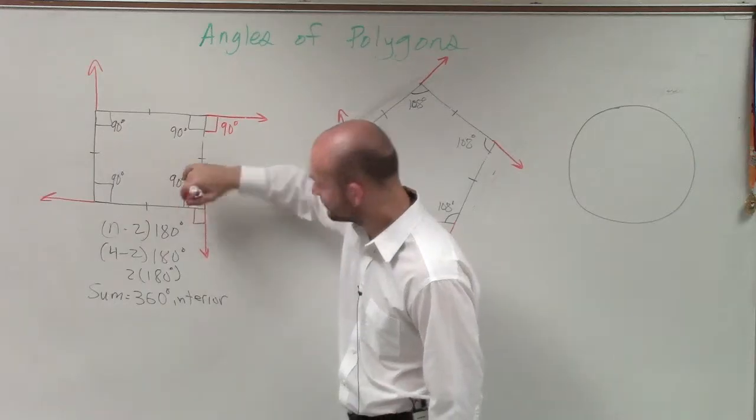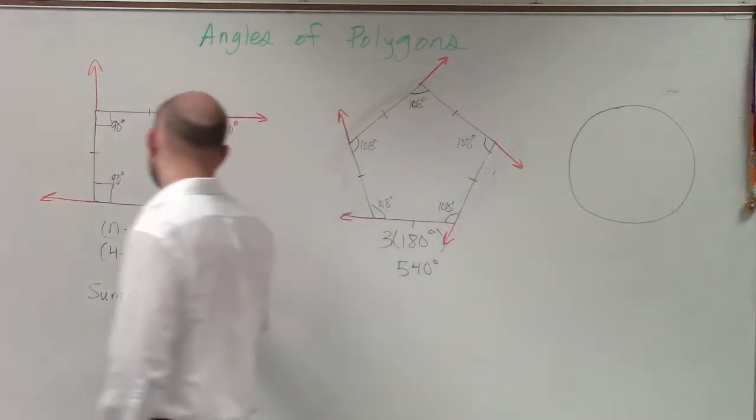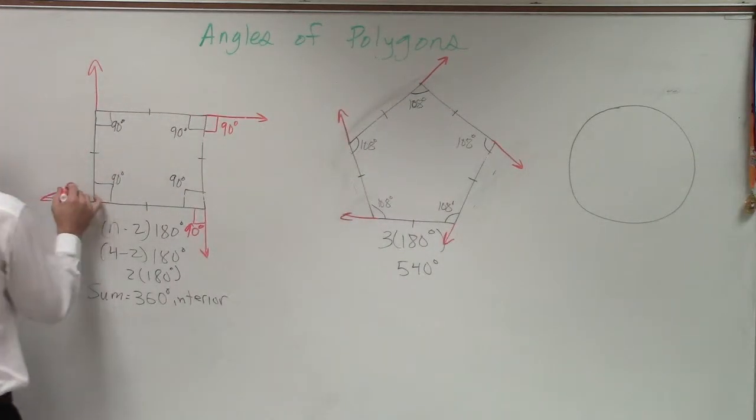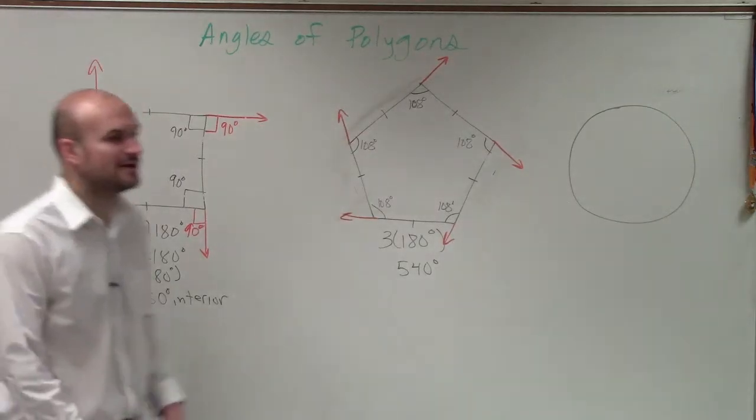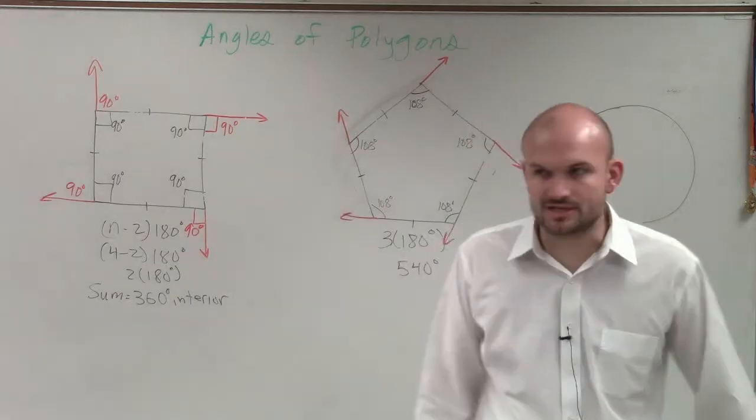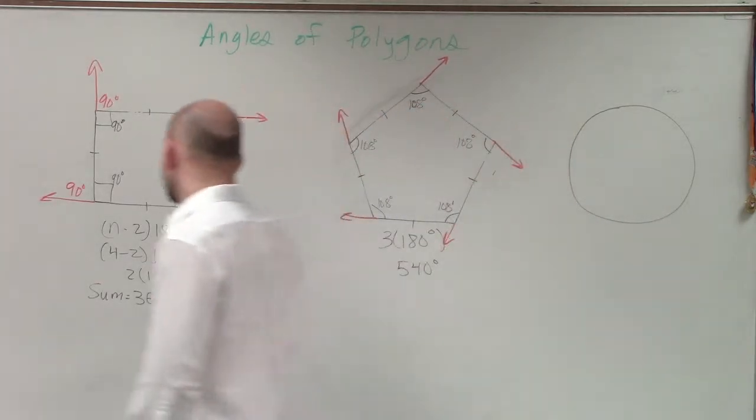And then what do you think about that one? 90. This one? This one? So now, if I go ahead and add up all of those angles in orange, what would be the sum of the exterior?